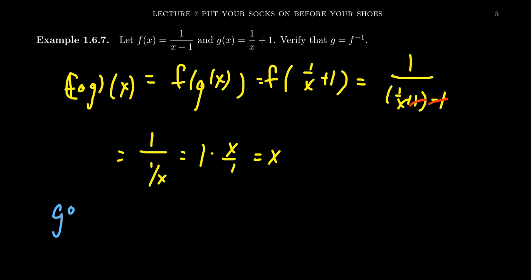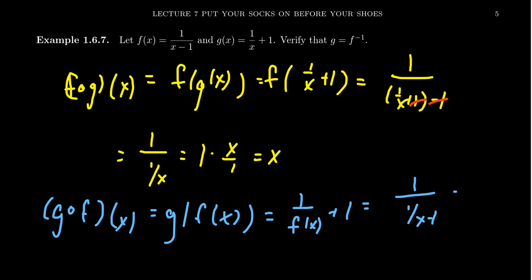Conversely, if we do G of F of X, like so, we're going to put inside of G, the function F of X. Well, G of X is the function 1 over something plus 1. That something is now the function F of X, which itself is a rational function. So we get 1 over 1 over X minus 1 plus 1.